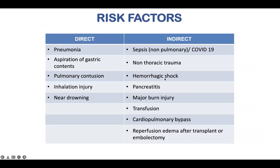Looking at direct versus indirect injury: direct injury includes aspiration, inhalation injury, pulmonary contusion, near drowning, pneumonia. Indirect injury includes trauma, sepsis, COVID-19, hemorrhagic shock, cardiopulmonary bypass, and burn injury — not inhalation, just major burn inflammation. Remember, inhalation is a direct injury. Patients with indirect injury, especially trauma with pulmonary contusions or hemorrhaging, typically respond very early to strategies designed to recruit the lung. We're also thinking about these patients for proning scenarios.